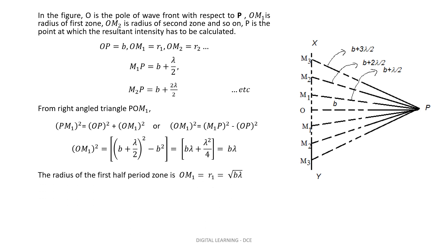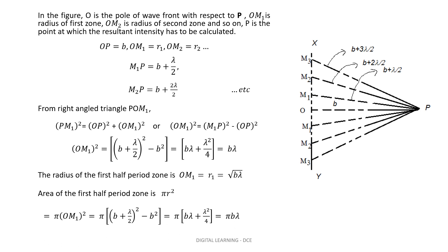So the radius of the first half period zone is OM1 = R1 = √(Bλ). Using this radius, the area of the first half period zone is πR² = π × OM1² = π(B + λ/2)² − πB² = π(Bλ + λ²/4). Again, ignoring λ²/4, the area of the first half period zone is πBλ.